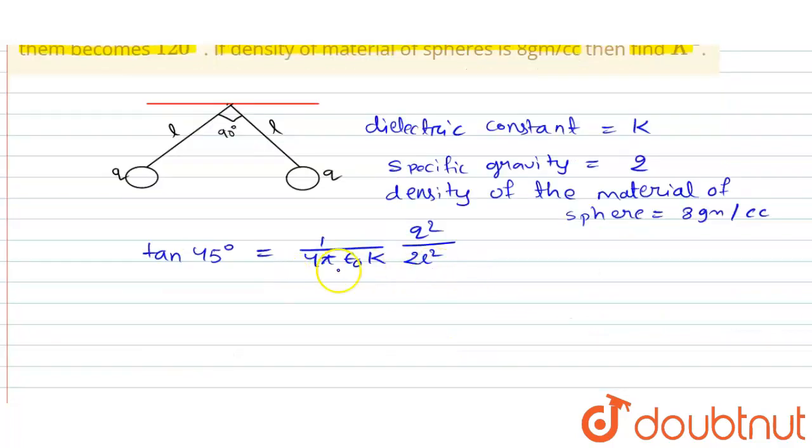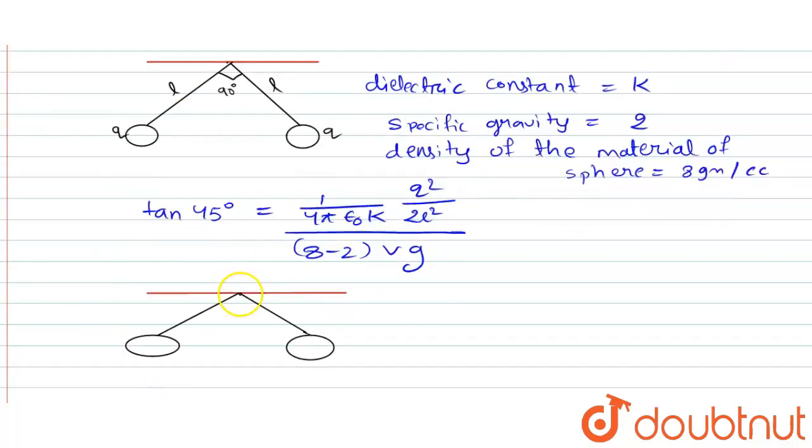Now in this question it is given that this system is moved to another medium. So you can write the diagram for this will be like this: this is the fixed point from which two equally charged spheres are suspended. Here it is Q and here also Q, length is also same L and L, but the angle becomes 120 degrees.